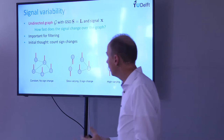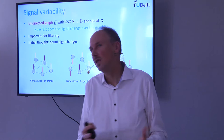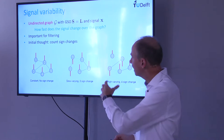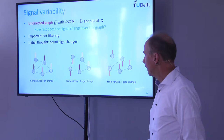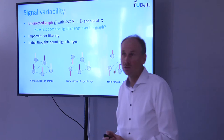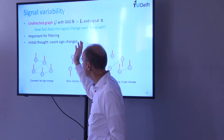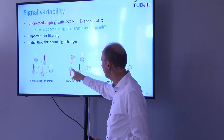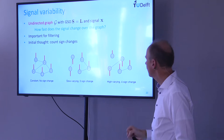Signal variability: how much does a signal vary over the graph? One approach is counting sign changes — edges where the signal changes sign. A signal with three sign changes is less variable than one with four. While intuitive, this is hard to formalize mathematically.